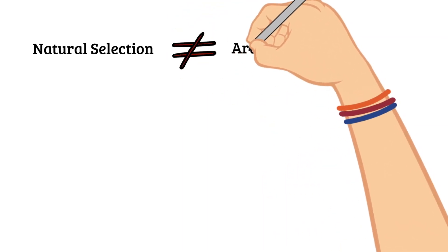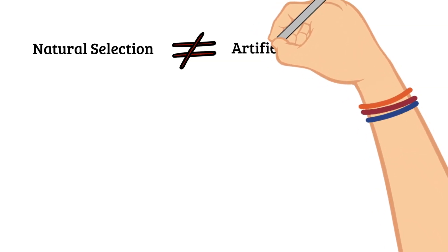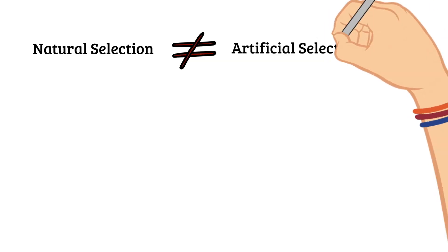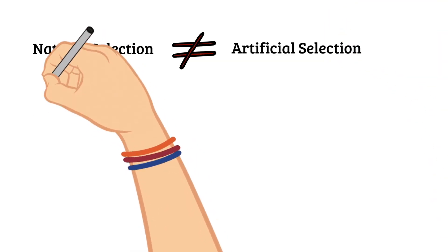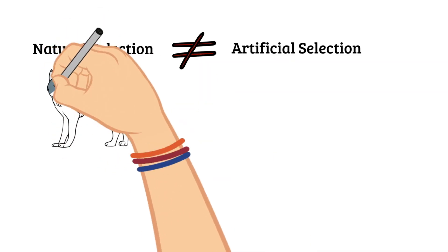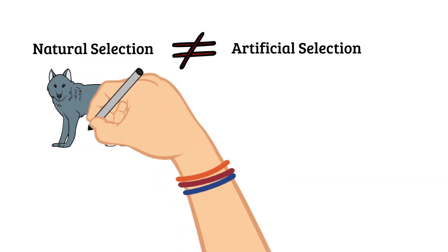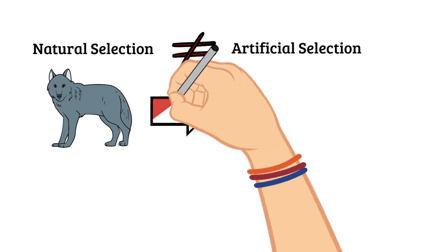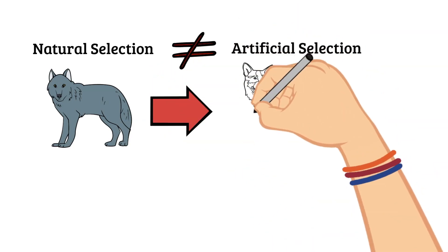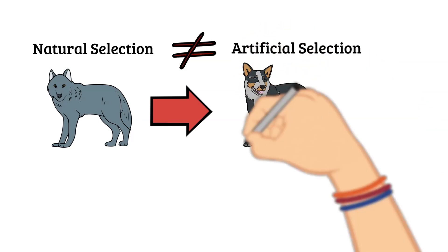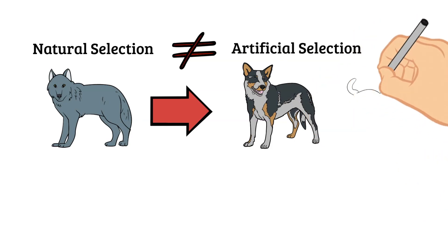Artificial selection is when humans choose favorable traits that they want in a certain species and they breed specifically for those traits. An example of this is thought to be the process of selecting favorable traits in dogs. People can select to breed dogs that have traits that make them good at herding sheep or cows, or they may select to breed traits that make the animal good at retrieving things.